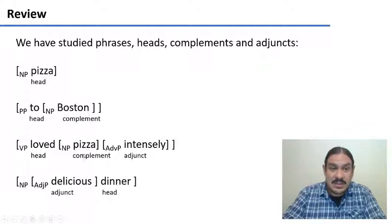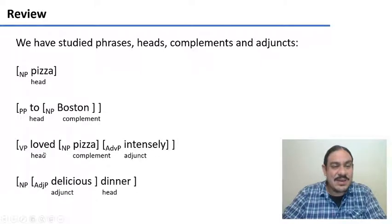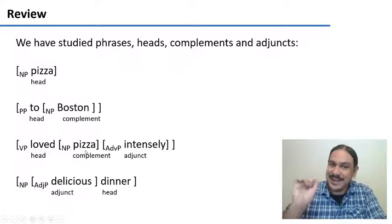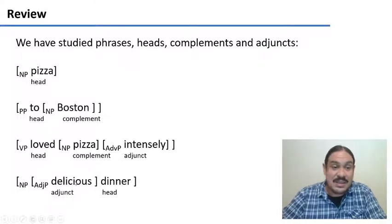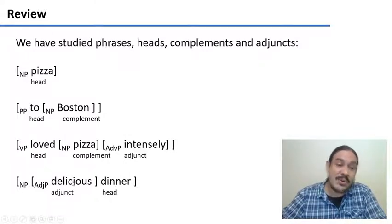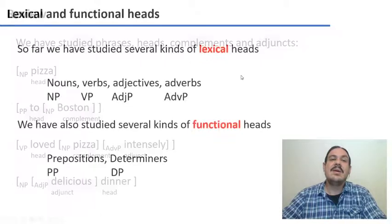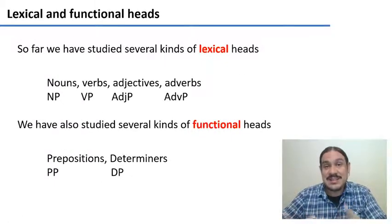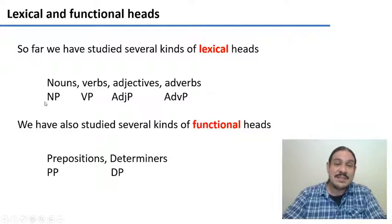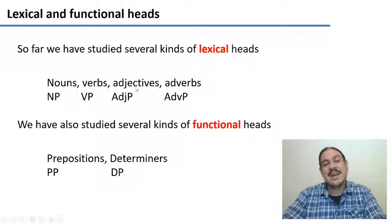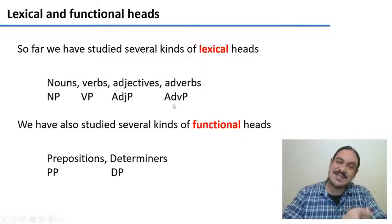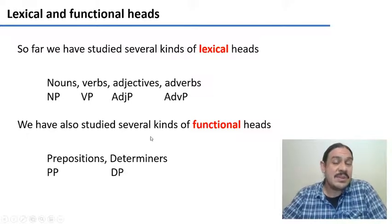Complements are usually to the right of the head. So in 'to Boston,' we have the head first and then the complement in English. The adjuncts in English can be either before or after the head — so 'intensely' is after the head, and 'delicious dinner' comes before the head. We have studied several kinds of lexical heads: nouns, which are the heads of noun phrases; verbs, heads of verb phrases; adjectives, heads of adjective phrases; and adverbs, heads of adverbial phrases. We have also studied several kinds of functional heads, for example prepositions, heads of prepositional phrases, and determiners like 'the,' 'a,' 'my,' 'this,' which are the heads of determiner phrases.